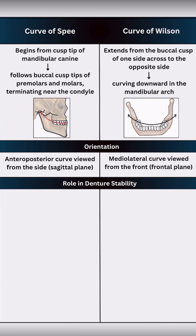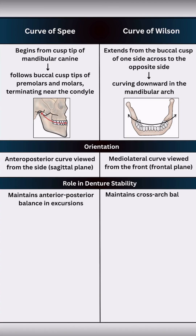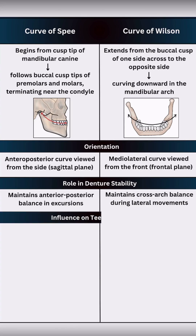In complete dentures, the curve of Spee helps to maintain balance during protrusion and lateral excursions and compensates for Christensen's phenomenon. The curve of Wilson maintains bilateral contact across the arch during lateral movements and prevents tipping of the denture.